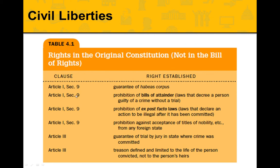Article I, Section 9 also prohibits bills of attainder, meaning you can't find someone guilty of a crime without a trial. You can't throw someone in jail without giving them a trial.